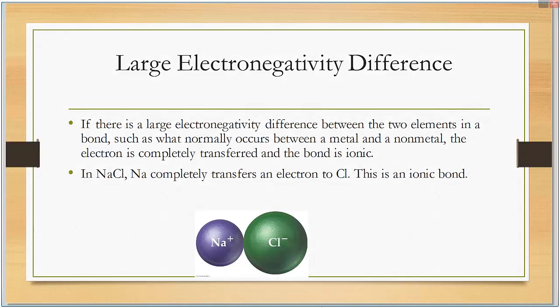If there's a large electronegativity difference between the two elements in a bond, such as with a metal and a nonmetal, the electron is completely transferred and the bond is ionic. Here's sodium chloride. The sodium completely gives up its electron to the chlorine.